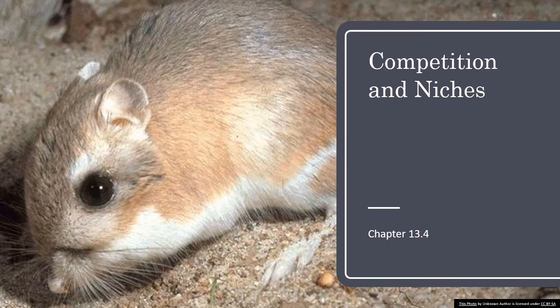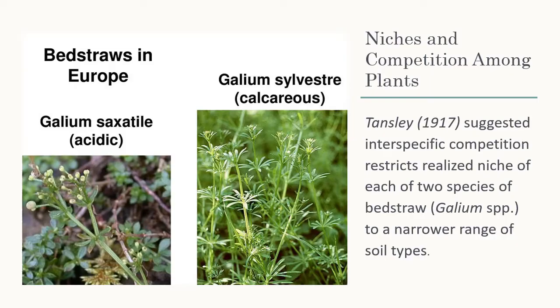We'll start off with a very old experiment done by Sir Tansley in Britain in 1917. He was looking at these common weeds called bedstraws — two species: one that was grown on more alkaline calcareous limestone soils, Gallium sylvestre, and the other, Gallium saxatile, which grew on more acidic soils. He suggested that interspecific competition restricts the realized niche of these two species to a narrower range of soils than they could actually live in.